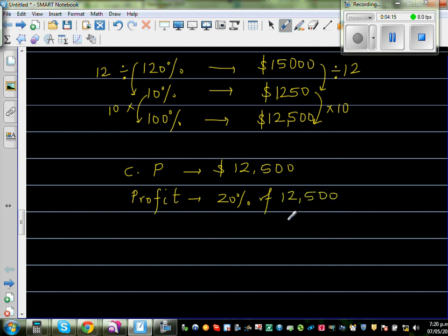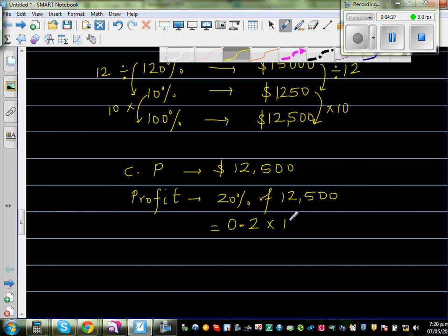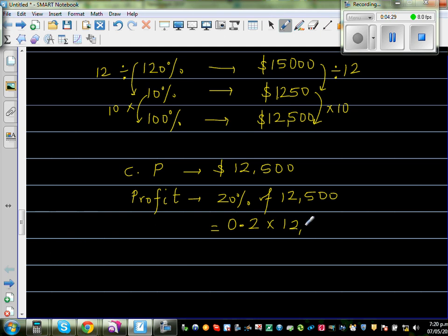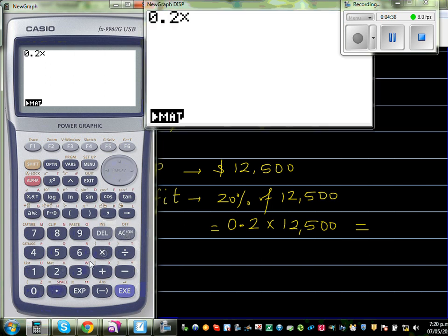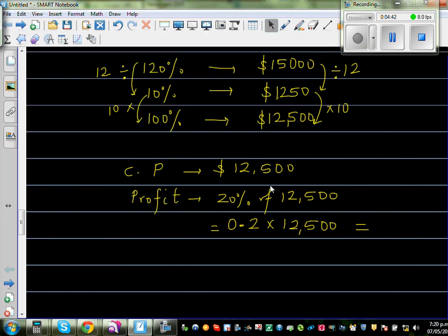So I will use the calculator. 20% is 20 out of 100, which is 0.2 times 12,500. So let us get the calculator out. This is 0.2 times 12,500, which is 2,500. So profit is $2,500.